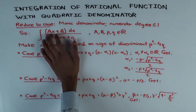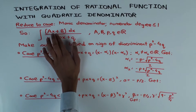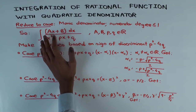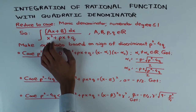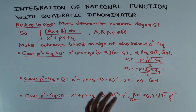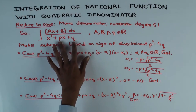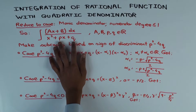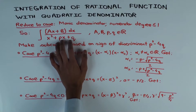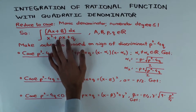The numerator could have A equal to zero, in which case it would just be a constant over a quadratic. If A is non-zero, it's a linear over a quadratic. We are doing both cases. Now, we have to make sub-cases based on the sign of the discriminant, which is P squared minus 4Q. The sign of that discriminant controls whether the denominator can be factored and how it factors.